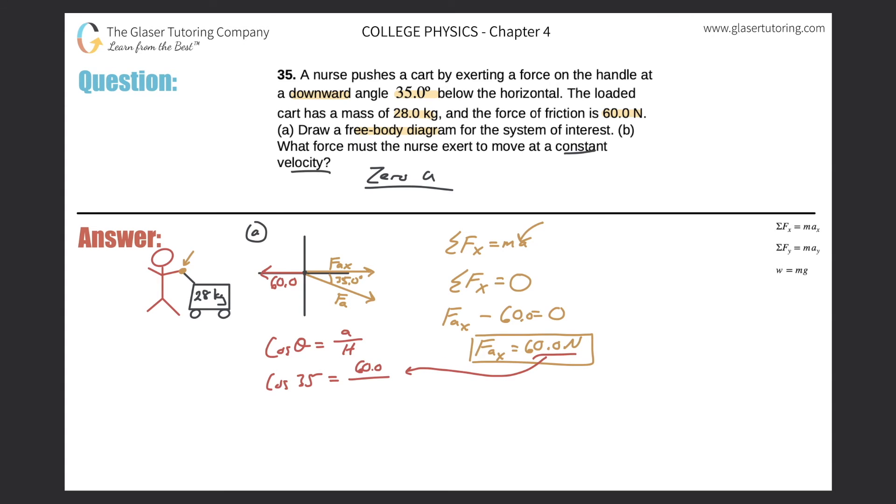Simply switch these two variables to solve for force applied. That would be 60 over cosine of 35. Plug that into your calculator: 60 divided by cosine of 35 comes out to be 73.2 newtons. That would be the force that the nurse would have to apply at an angle of 35 degrees below the horizontal on the cart so it overcomes the force of friction and is able to move at a constant velocity.